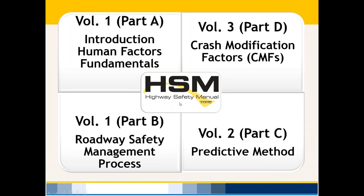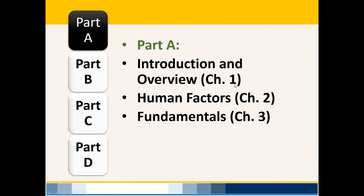The HSM has four parts: Part A is the introduction and human factors, Part B is safety management, Part C is the predictive method, and Part D is crash modification factors. Jared will cover Parts A and B, and Mike Vaughan will go into depth on Parts C and D, which are more pertinent to most design and planning job functions.